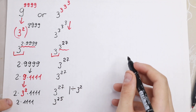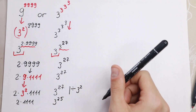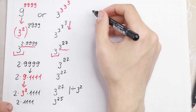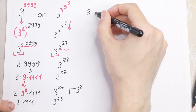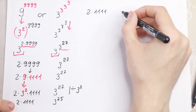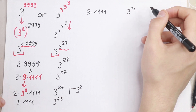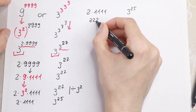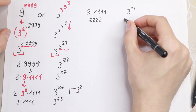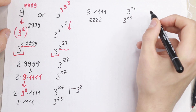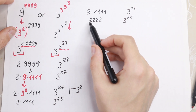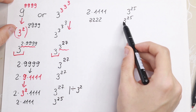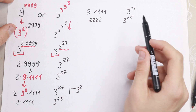Right now we are going to compare these two numbers. I hope you understand this step. So let's compare: on the left we have 2 times 1111, which equals 2222, and on the right we have 3 to the power 25. We now have a completely concrete number on the left — 2222 — and we need to find the value of 3^25.